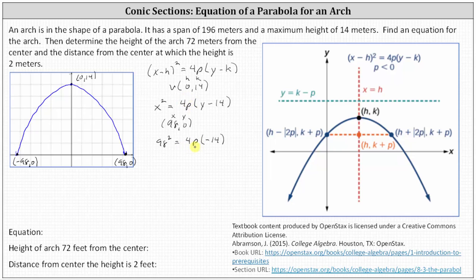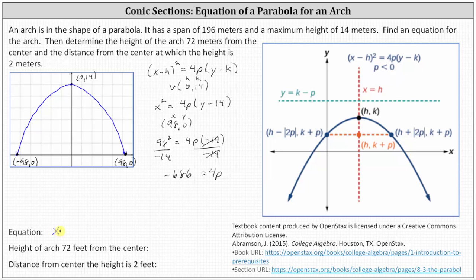We divide both sides by negative 14. Simplifying, we have 4p = 98² ÷ (−14), which equals −686. So now that we know 4p, our equation is x² = −686(y − 14).